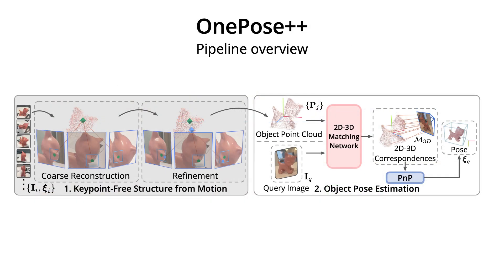Therefore, we propose OnePose++, which is a keypoint-free framework. This is an overview of our method. It is composed of a novel keypoint-free structure from motion to reconstruct a semi-dense object point cloud, and a keypoint-free 2D-3D matching module to build correspondences between the object point cloud and query image for pose estimation.